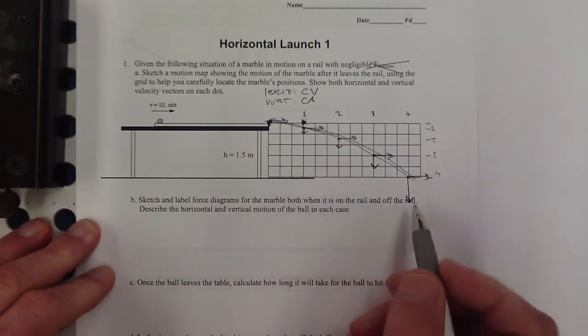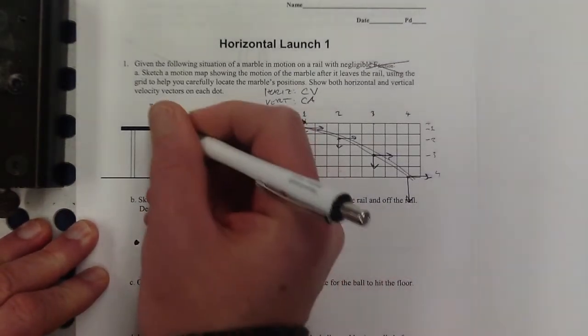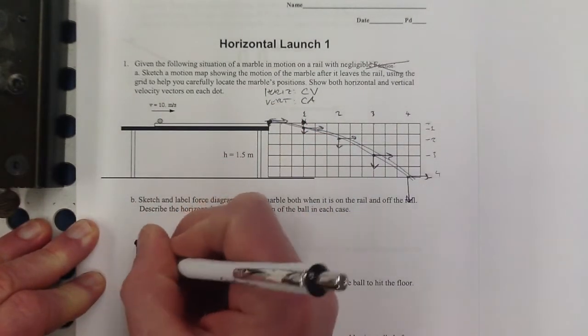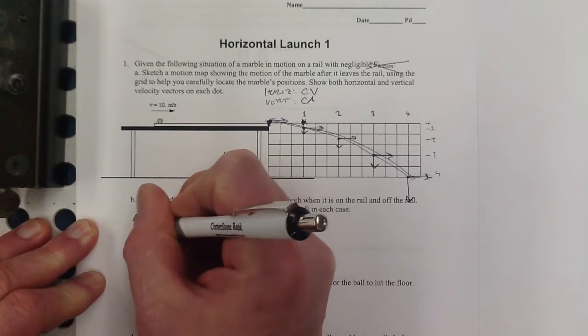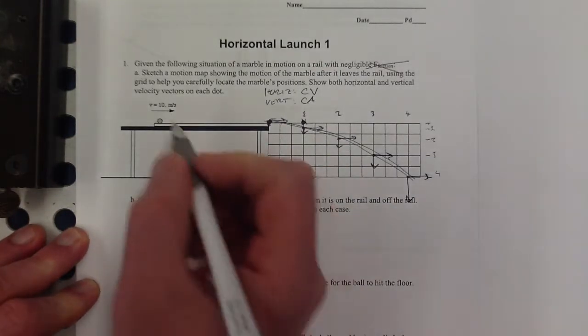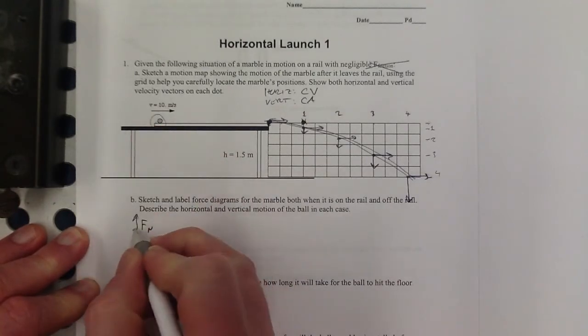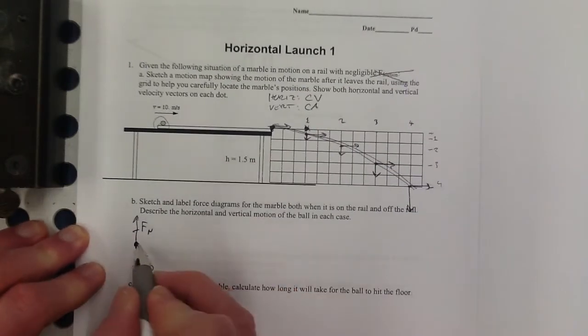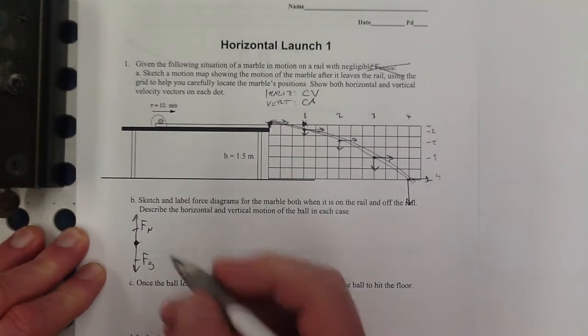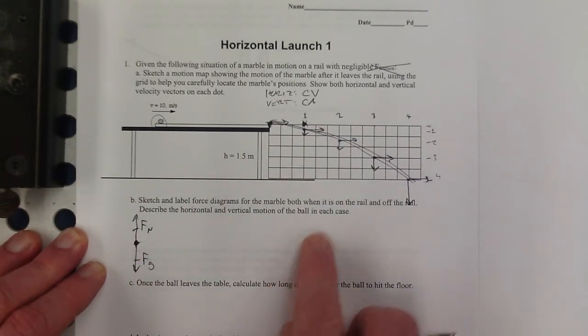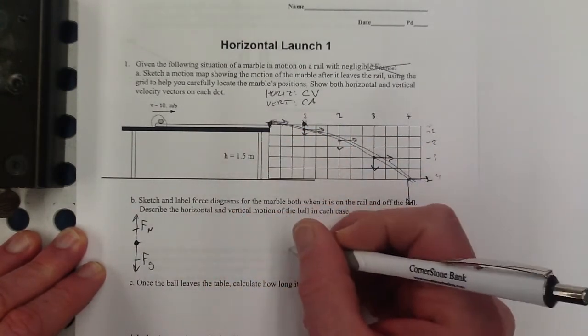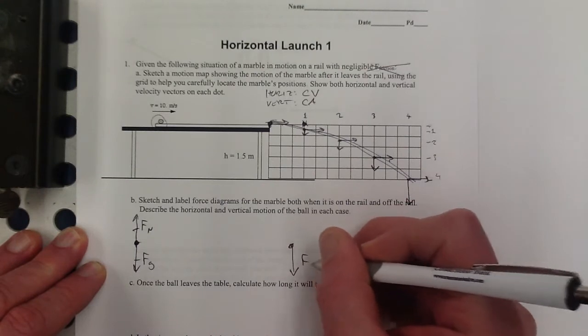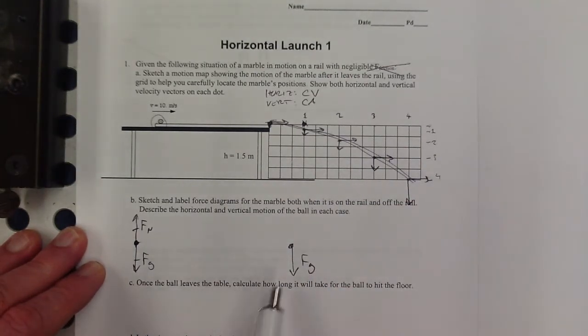Sketch and label force diagrams for the marble, both when it's on the rail. So on the rail, this is just like the bowling ball going through a no-touch zone. I've got force of gravity, and I've got a normal force. There's no force of motion or something. If the forces on this are balanced like this, then it just rolls at a constant velocity, right? Forces are balanced can be at rest or constant velocity. There does not need to be a forward force for it to move forward. So ain't nothing there. And then when it's off the rail, then there's no more support force, just the force of gravity. That's all. And that's kind of the definition of what free fall or what projectile motion is when something's only under the influence of gravity.